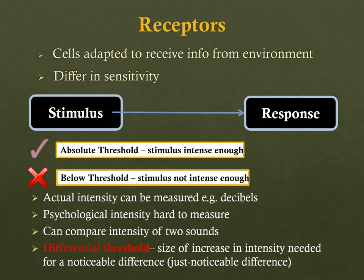The size of the increase in intensity that results in a noticeable difference is called the differential threshold. This threshold differs across various sensory modalities.